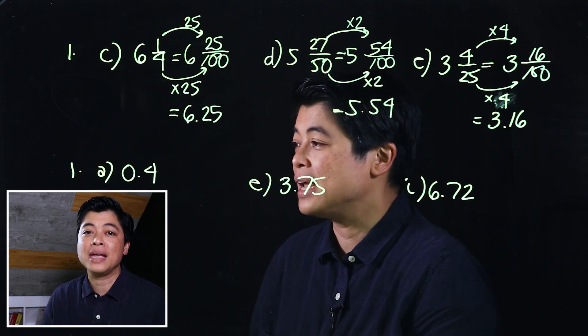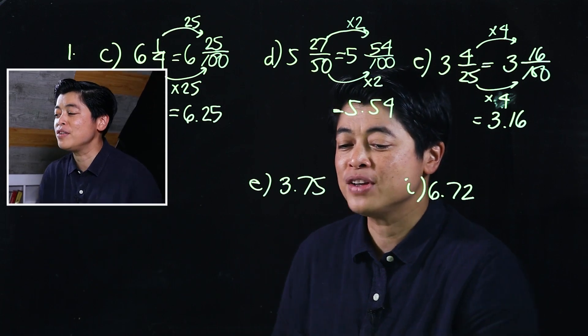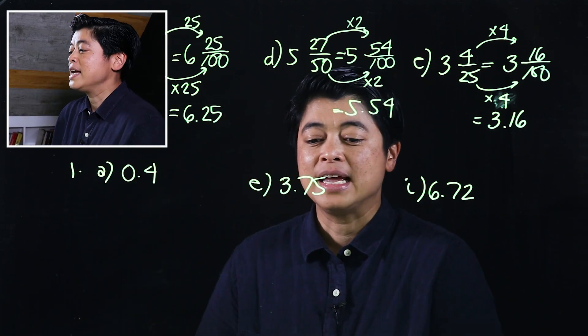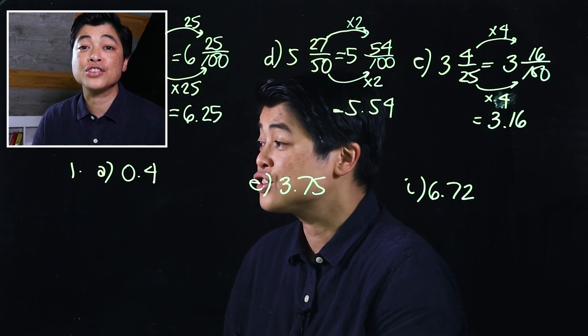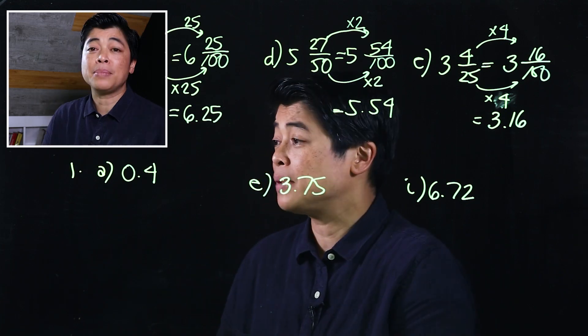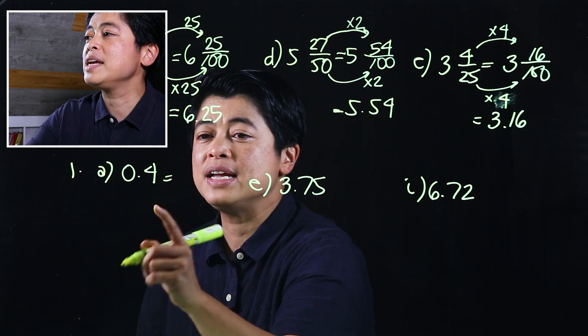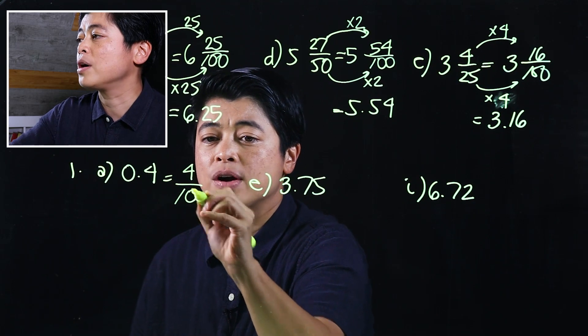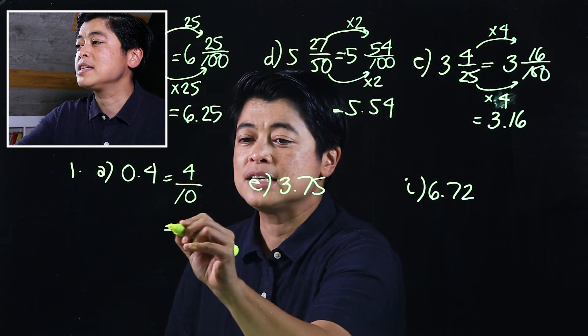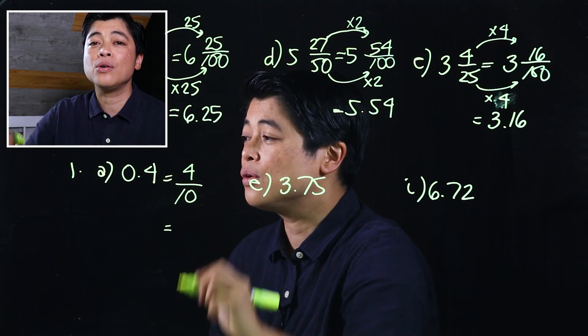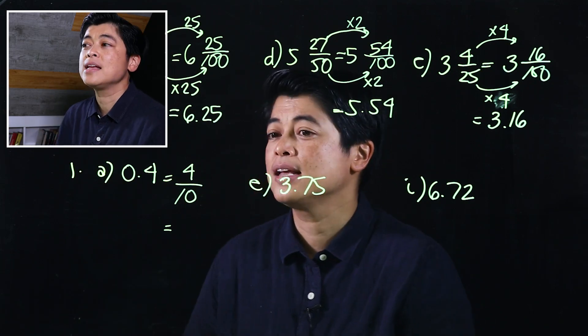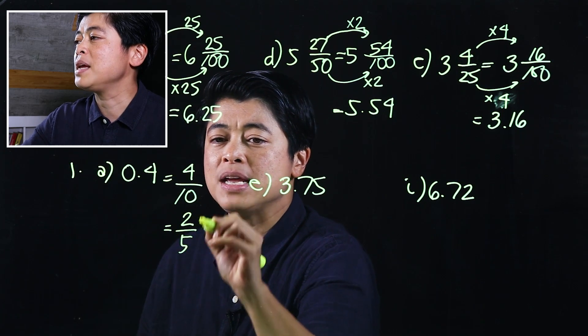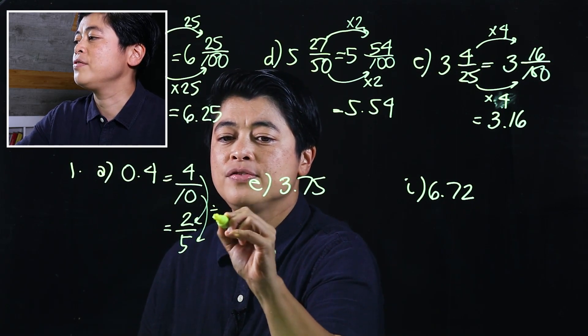Moving on to page 85, it says express each decimal as a fraction and write in simplest form. This we read as 4 tenths, so if it's 4 tenths, that would be 4 over 10. Since both of those are even, I know I can simplify it by dividing both top and bottom by 2, which means this must be 2 over 5.